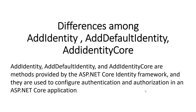Hello everyone, welcome to my channel ESP.NET Core. Today we are talking about differences among identity — AddIdentity, AddDefaultIdentity, and AddIdentityCore — which are extension methods you can see in your services. These are methods provided by the Microsoft Identity framework and they are used to configure authentication and authorization in an ASP.NET Core application.